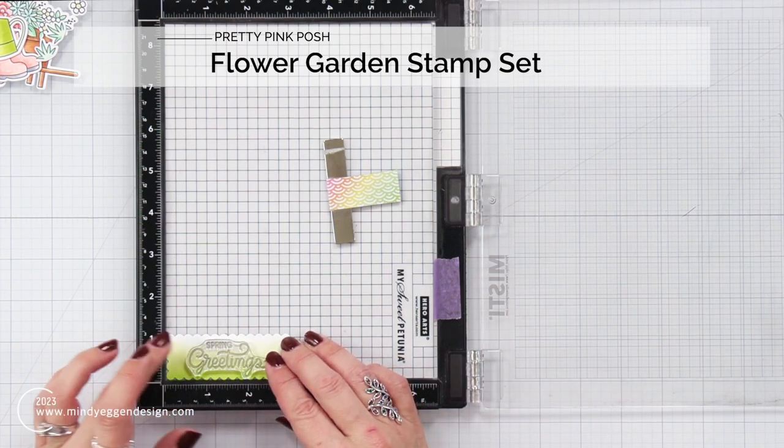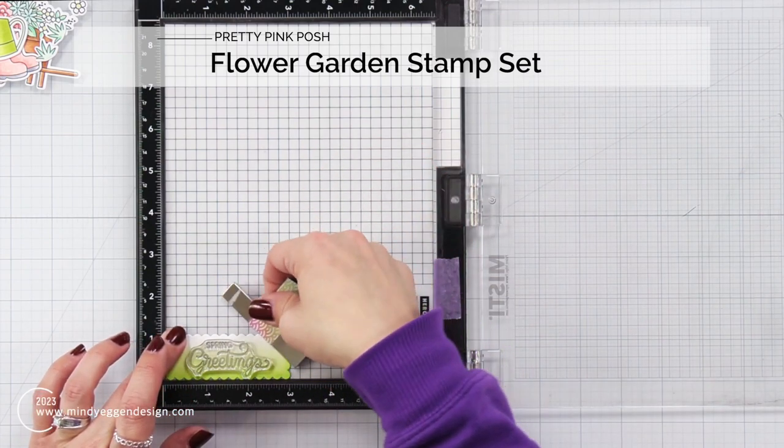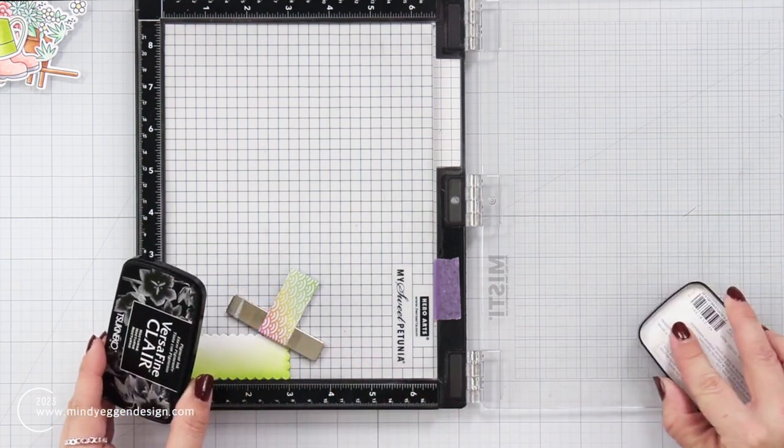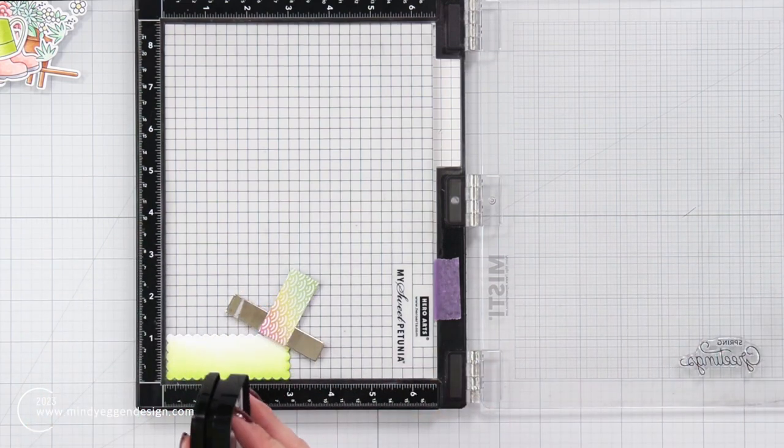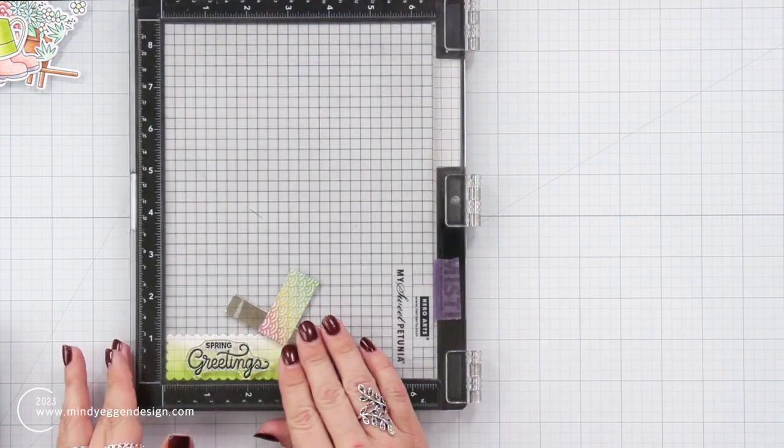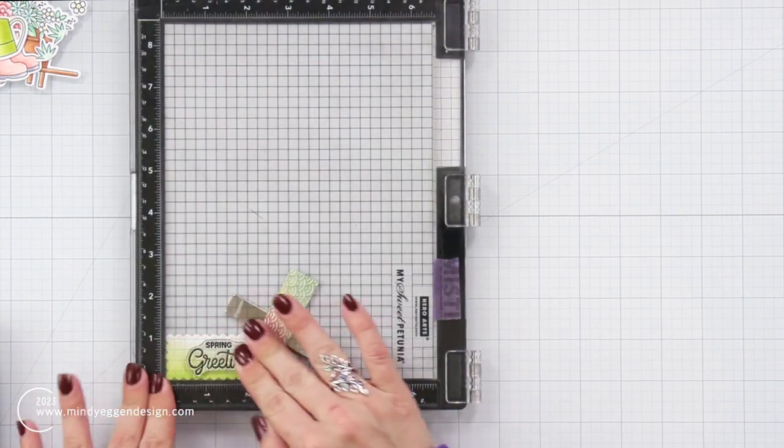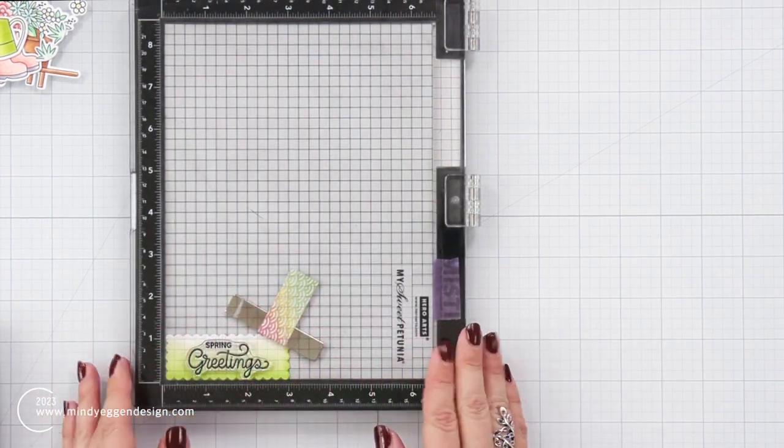Before I start adhering anything together, I want to get my sentiment stamped on this piece. So this is that scalloped piece that's going to go on the front of the box. I picked out a spring greetings sentiment. This is off of the Flower Garden stamp set and I'm stamping that in the black VersaFine ink.